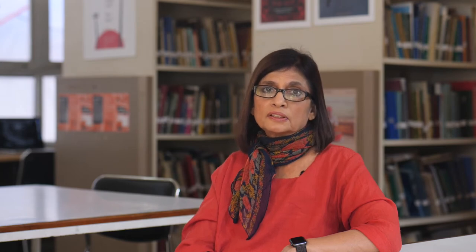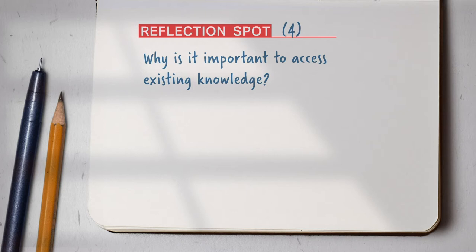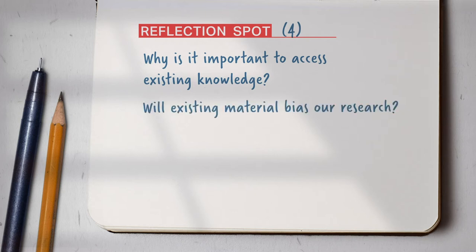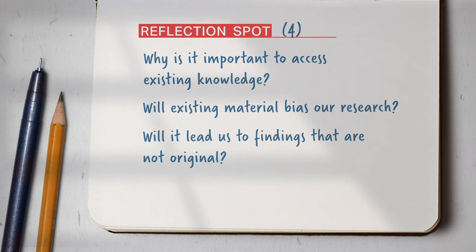Next, we need to learn about the subject that we are going to research from the knowledge that already exists about it. What do we already know and what knowledge already exists? Why do you think it is important to access existing knowledge about our subject? Can you think of one reason? And is it possible that we may get biased by looking at existing material, or maybe less likely to come up with something original? Take a minute and note down your answer.